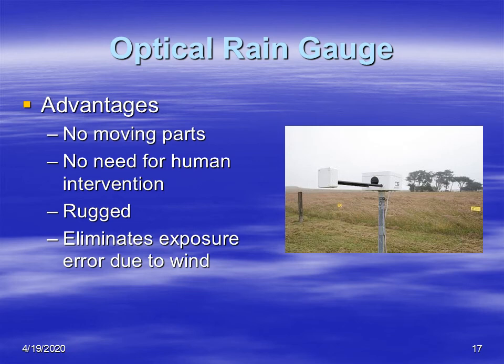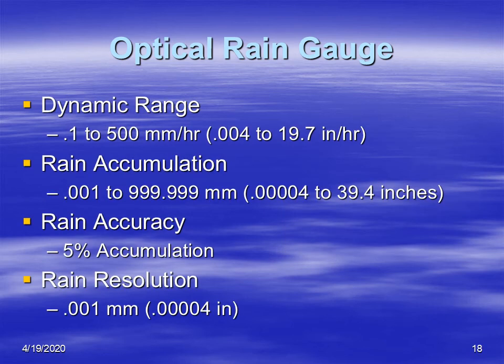The advantages to an optical rain gauge are that there are no moving parts, you don't need a human, it's pretty rugged, and it eliminates the exposure error that results from wind. Its dynamic range typically is somewhere between four one-thousandths of an inch of precipitation per hour all the way up to close to 20 inches per hour. Accumulation can be measured up to 39.4 inches of precipitation. It has an accuracy of five percent, and the resolution is down to tens of thousandths of an inch of precipitation.